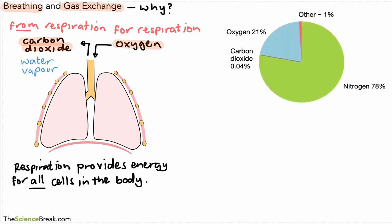Let's take a look at what's in the air that we breathe in. This pie chart shows the percentage of different gases in inhaled air. Oxygen is about 21%, carbon dioxide is a tiny amount at 0.04%, and we have nitrogen gas which is 78%. Most of the air we breathe in is nitrogen.